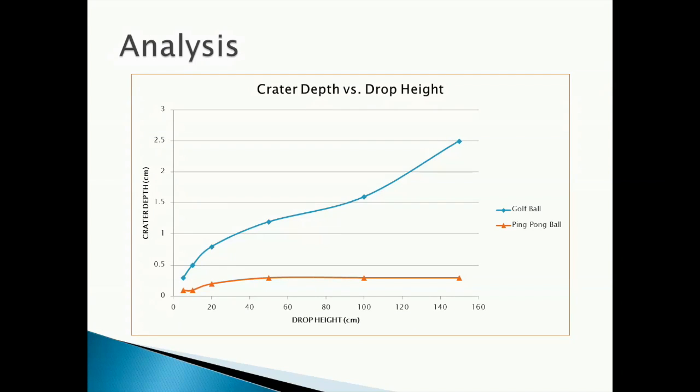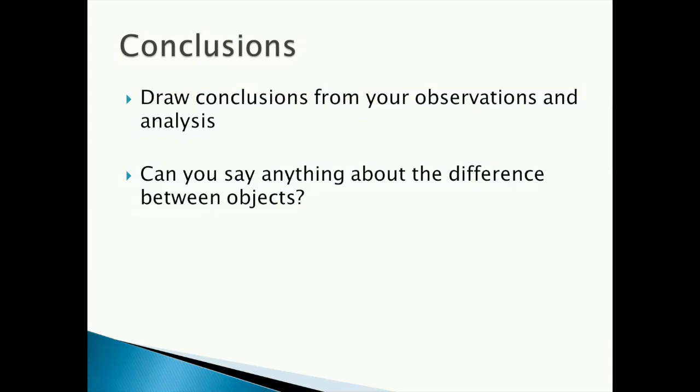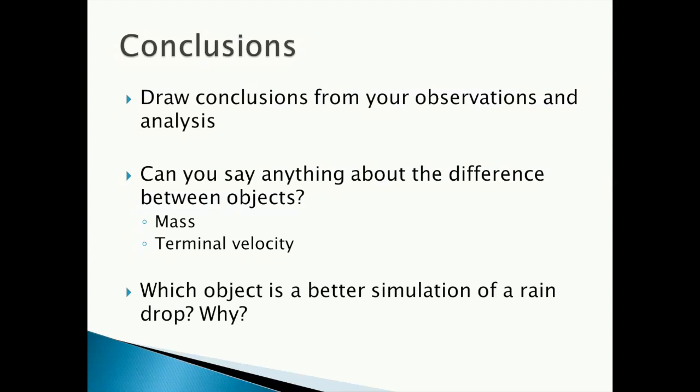When performing your analysis, plot the crater depth on the y-axis versus the drop height in centimeters for each object on the x-axis. Draw conclusions from your observations and analysis. Can you say anything about the difference between objects, maybe in terms of their mass or terminal velocity? You should also try to answer which object you think is better for simulating a raindrop and why. There's no right answer or wrong answer to this question.